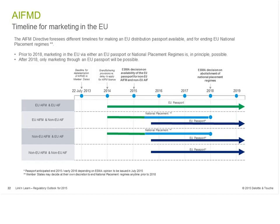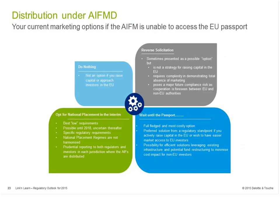In the meantime, the question remains: how can managers unable to access the passport raise capital within the EU? Theoretically, there are four options. The first is do nothing, but that is not an option if you wish to raise capital. The second is reverse solicitation: although theoretically conceivable, it should not be considered as a de facto strategy, as it requires demonstrating the real absence of marketing activities vis-à-vis the end investor. Regulators provide little clarity here, and strategies should only be considered after extensive research on a case-by-case, jurisdiction-by-jurisdiction basis — what may work in one EU member state will most probably not work in another.